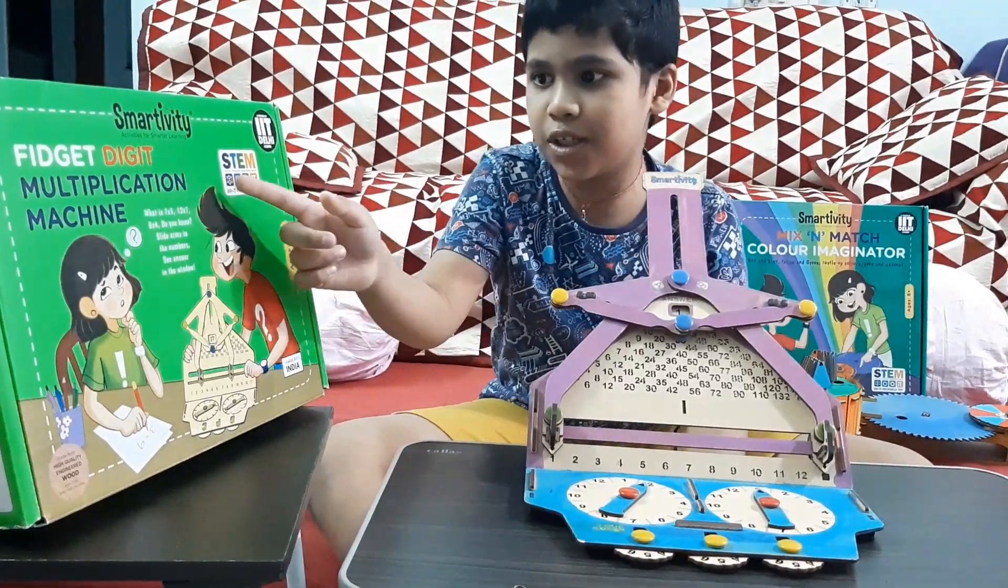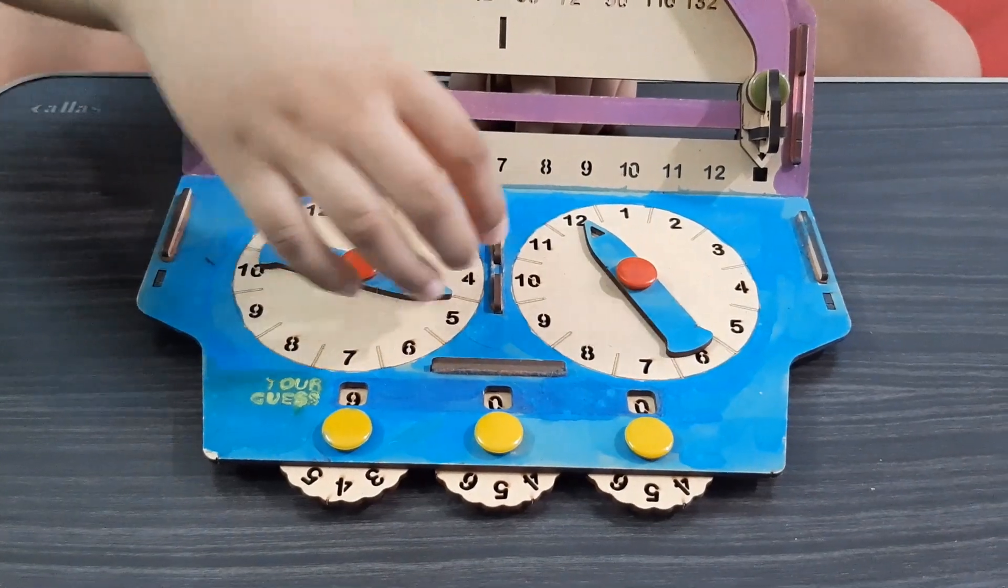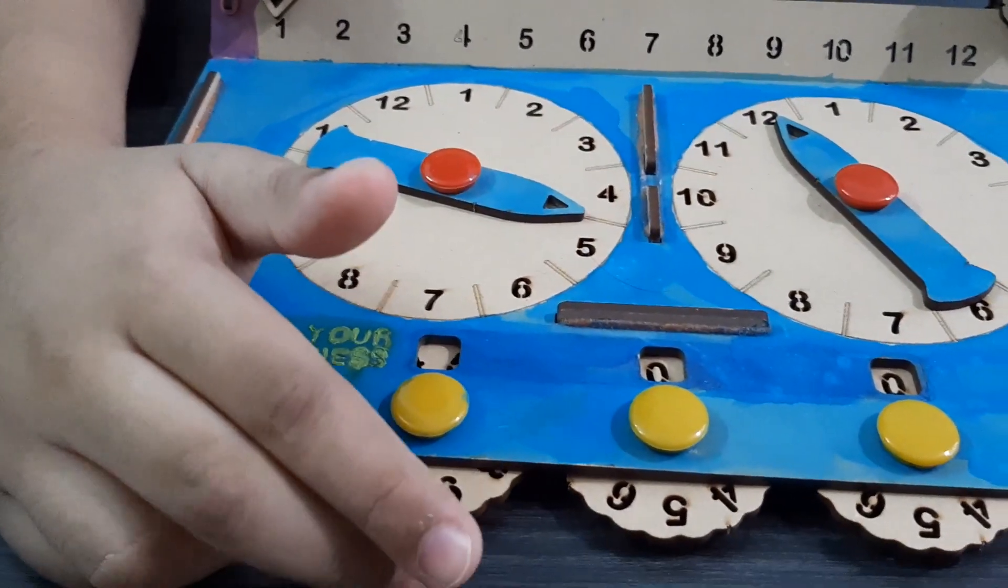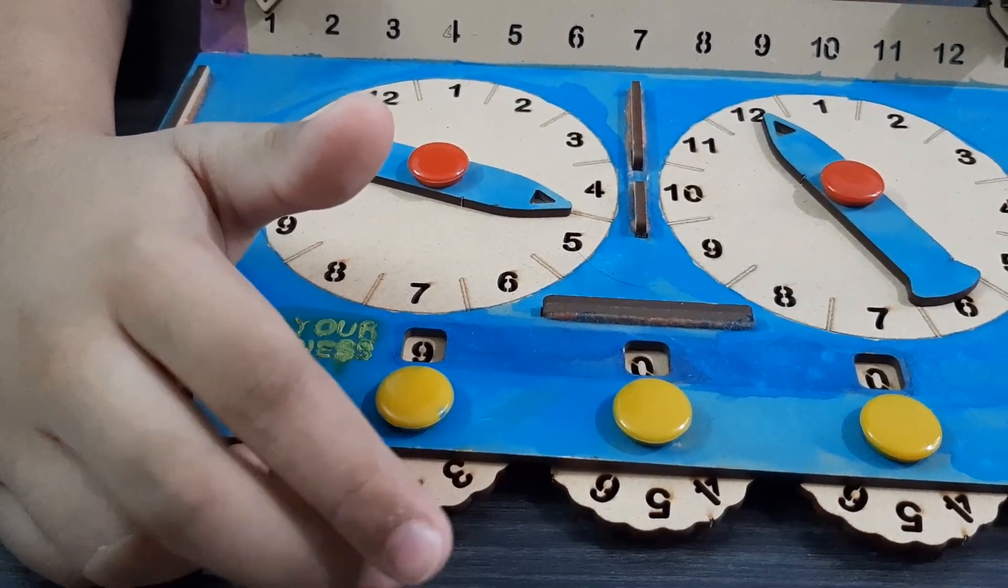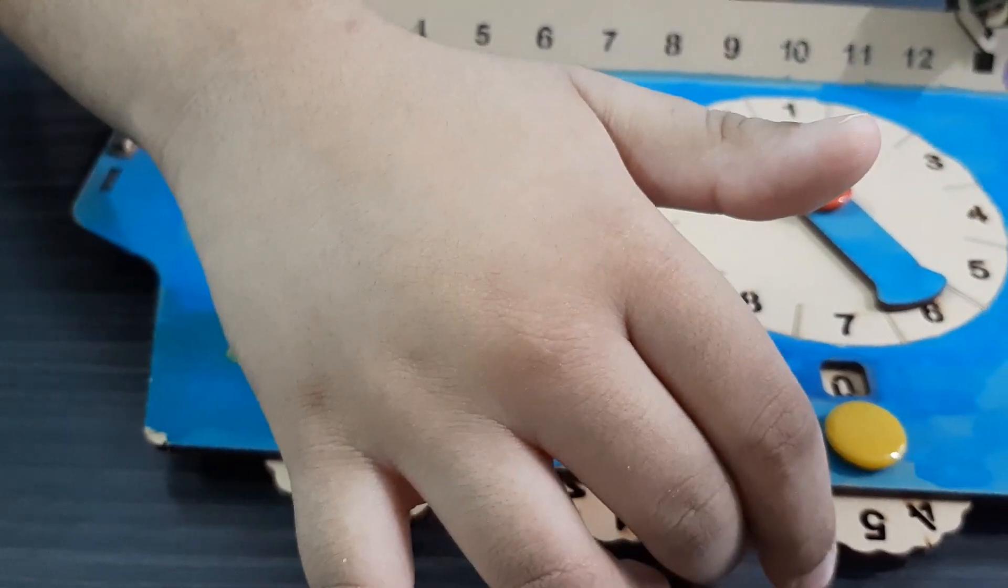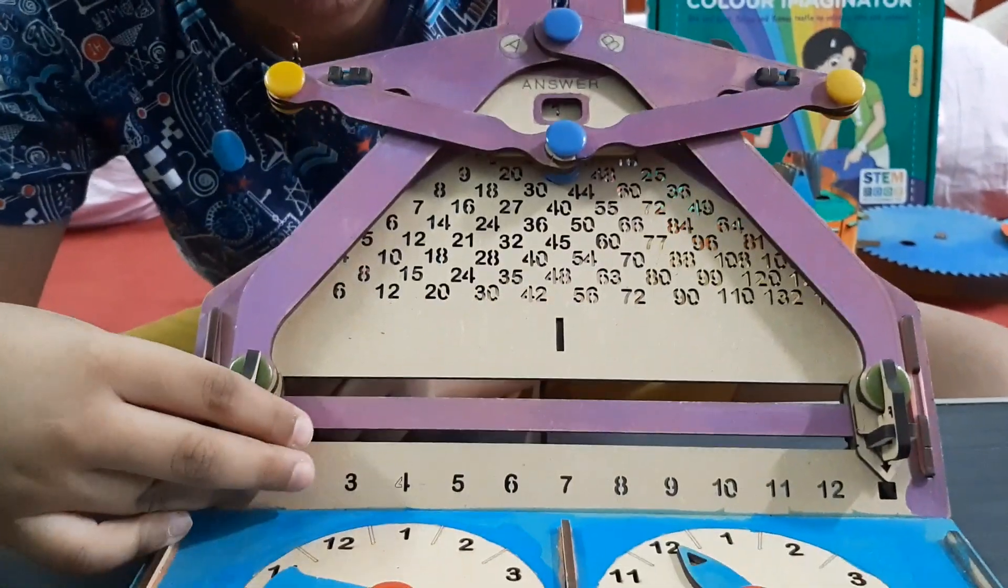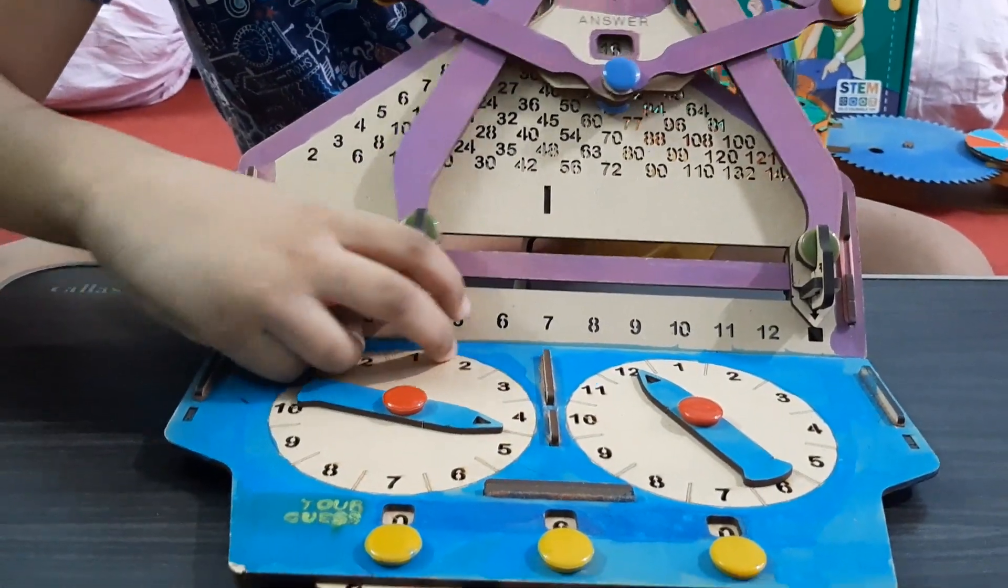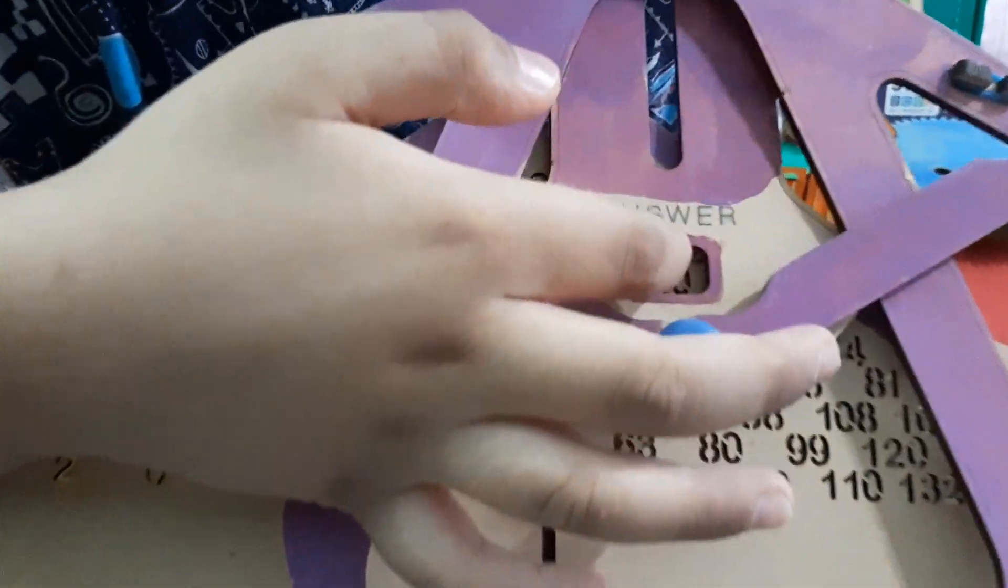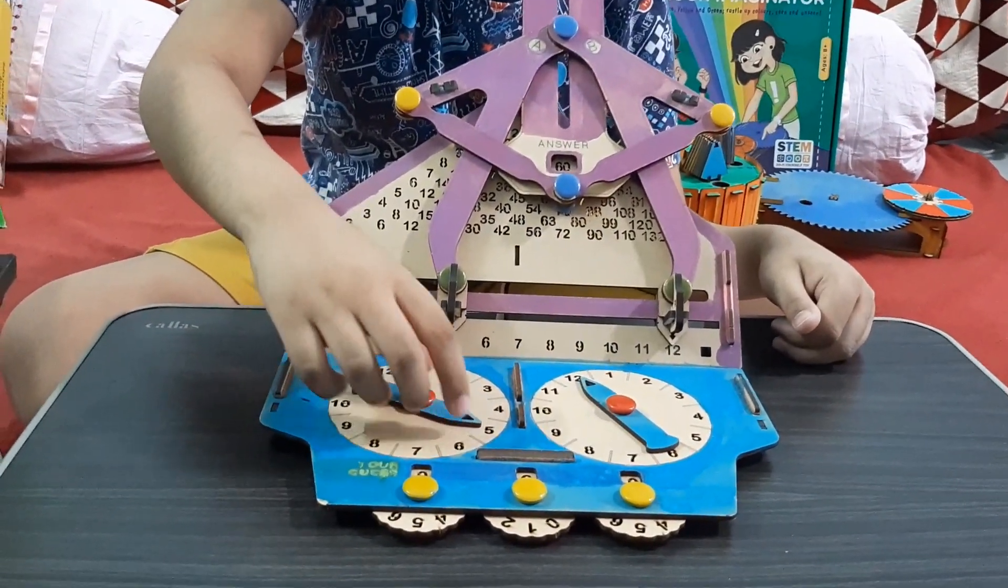It's a Smartivity multiplication machine. Let's start. First, spin the spindle. So I got 5 and 12. So in my guess, 5 times 12. Now can we check in the multiplication table. 5 here, 12 here. So in the answer it says 60. So my answer was right. So 12 times 5 is 60.